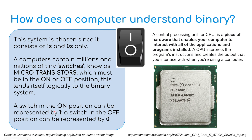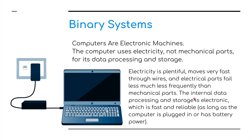A switch in the on position can be represented as a 1, and a switch in the off position can be represented as a 0. This picture here is an example of a CPU — the brains of the computer. In this CPU, the central processing unit, it's a piece of hardware that enables your computer to interact with all the applications and programs installed on your computer. A CPU interprets the program instructions and creates the output that you interface with when you're using your computer. Computers are electronic machines that use electricity, not mechanical parts, for data processing and storage.